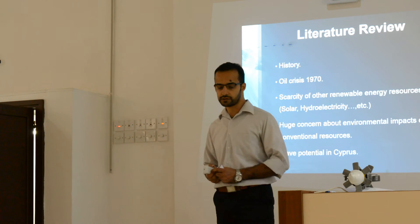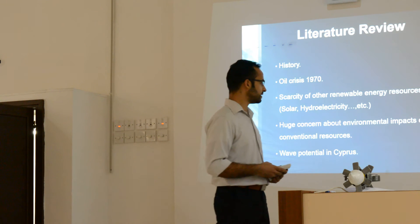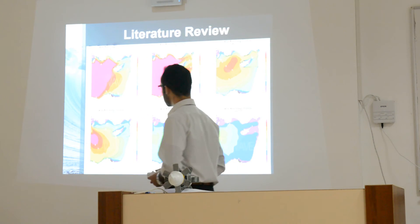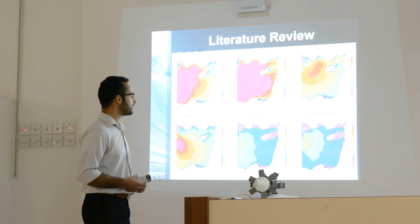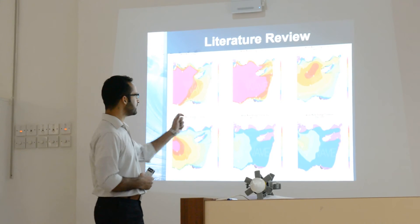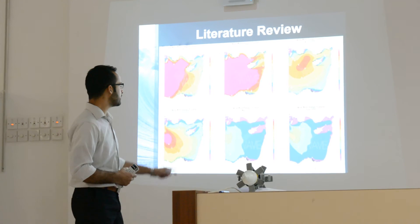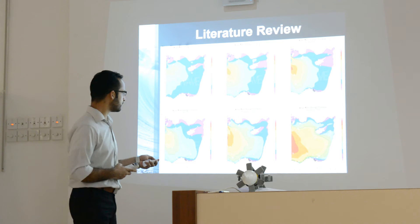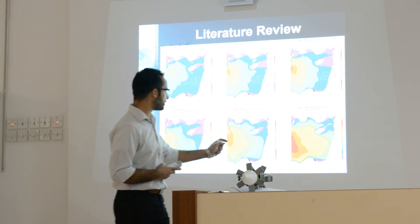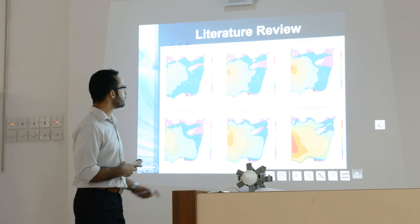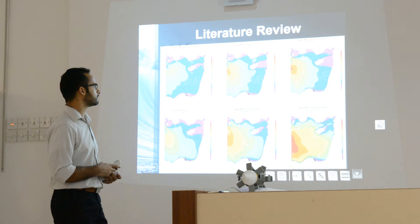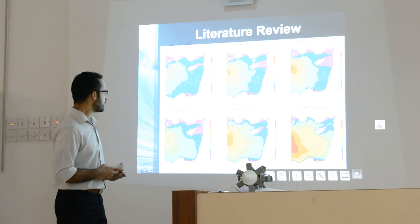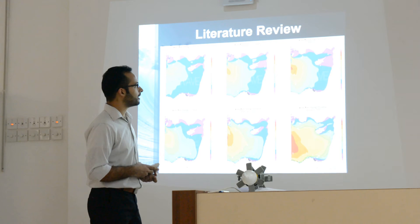In 2005, there was a study about the Western Mediterranean Sea wave energy potential. As you can see in this figure, the wave energy potential ranges from 5 to 6 kilowatts per kilometer from October until November, and it decreases during months like July and September.